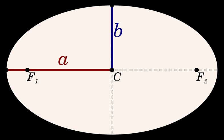If a is in the x-direction, the equation is: (x − h)² / a² − (y − k)² / b² = 1.